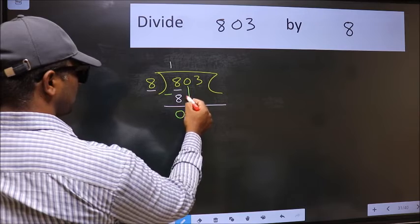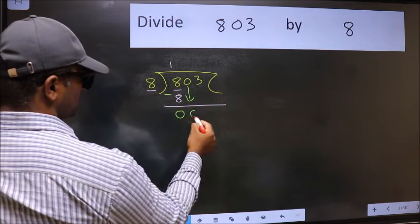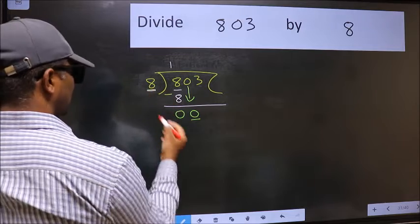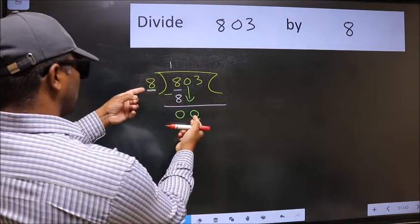After this, bring down the beside number. So 0 down. Here we have 0 and here 8. 0 is smaller than 8.